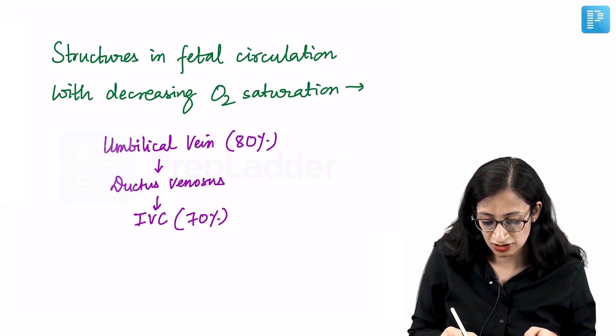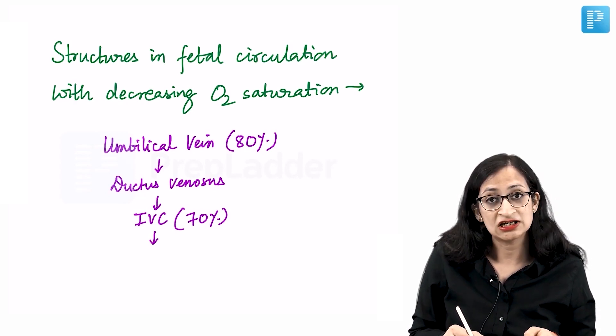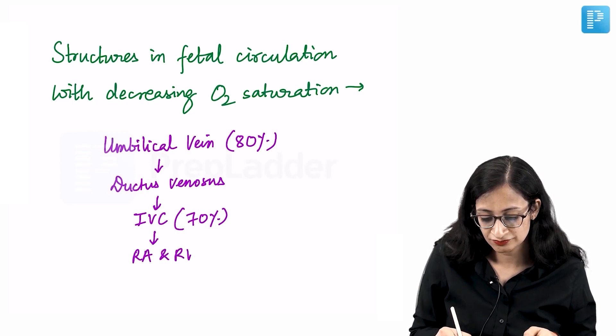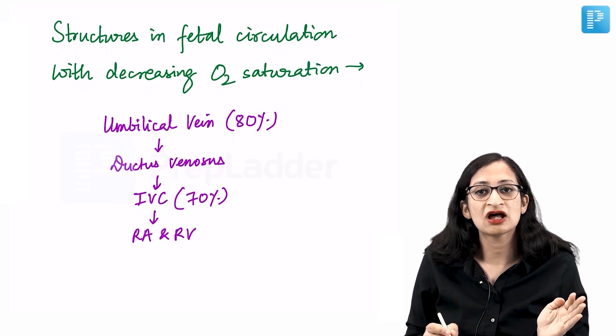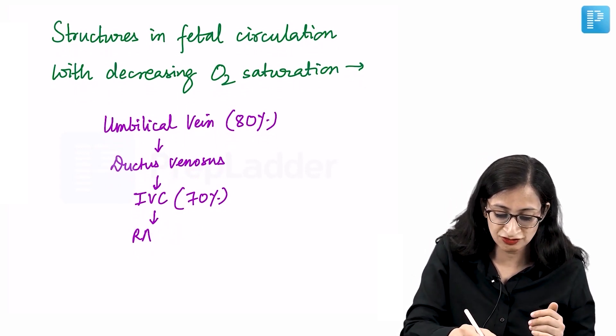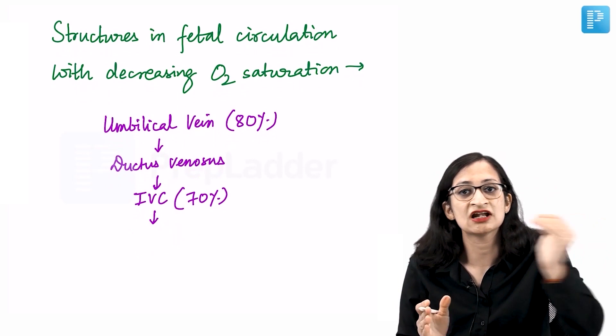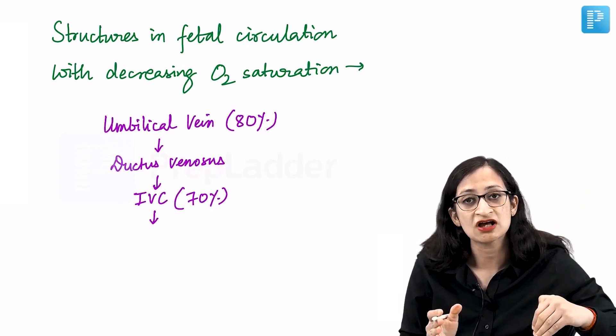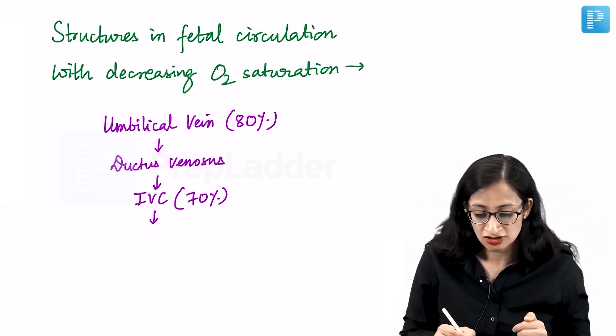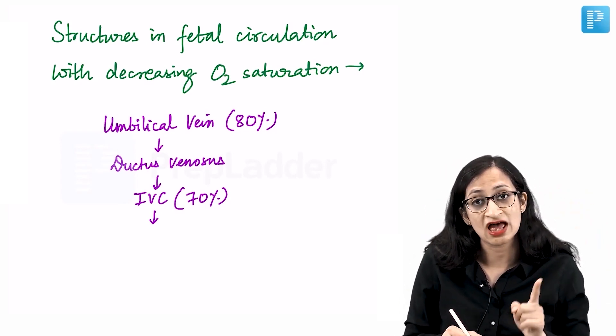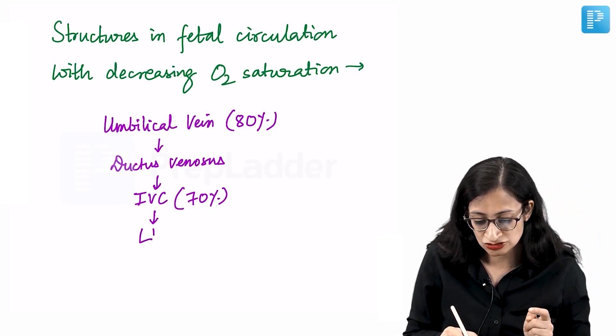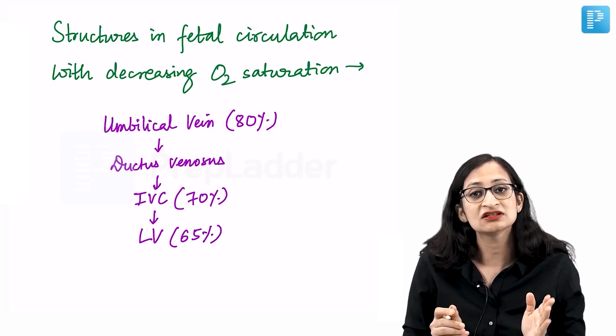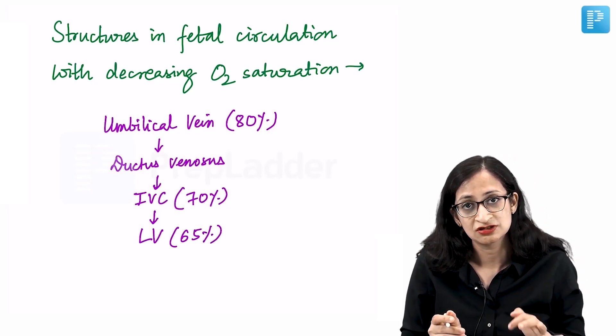From the inferior vena cava, blood goes to the right atrium and right ventricle. In fetal circulation, some blood will directly go to the left atrium and left ventricle, while some will mix with superior vena cava blood and go to the right ventricle. The saturation in left ventricle is more than in the right ventricle. Left ventricle blood is around 65%, while right ventricle blood is around 55 to 60%.